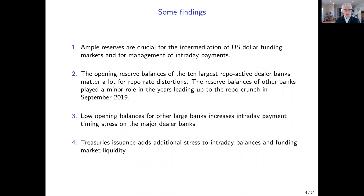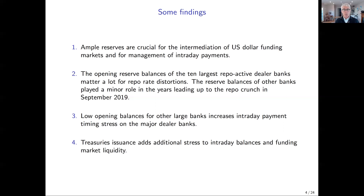There are additional sources of stress on the availability of reserve balances. Those additional sources we discovered are issuances of new Treasury securities by the U.S. Treasury Department. When those Treasury securities are issued, the dealer banks have to pay for them first thing in the morning — and they have to pay with reserves. Those reserves get extinguished: they disappear from the reserve balances of all banks and go into the Treasury special account at the Fed, becoming unavailable to the market. That adds stress to the repo market, not just because there's less balances, but also because dealers must pay first thing in the morning, eliminating any timing option.